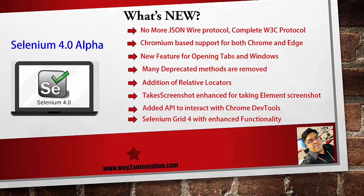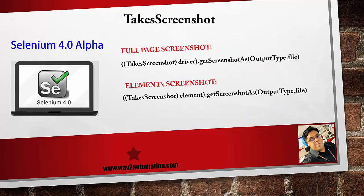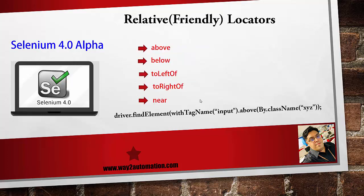To capture an element screenshot, when capturing a full page screenshot you call the TakesScreenshot interface typecasted with a driver reference and call the method getScreenshotAs with OutputType.FILE — this generates a full page screenshot. The only change needed to capture an element screenshot is to pass the element instead of the driver. The TakesScreenshot interface is thus enhanced with the functionality of capturing element-level screenshots.